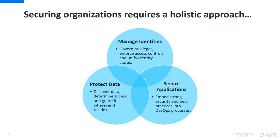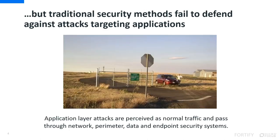Securing organizations requires a holistic approach. A CISO will have some variation of these three themes shown here when it comes to security objectives. First, manage identities — the key is knowing who has access to what and how privileges are managed. Next, protect data. Data is at the heart of it all, and we're still seeing a dramatic rise in data volumes. Then, secure applications. Mobile and web application releases are increasing in frequency and invite more risk to the business through vulnerabilities. A holistic approach is necessary since traditional security methods fail to defend against attacks targeting applications.